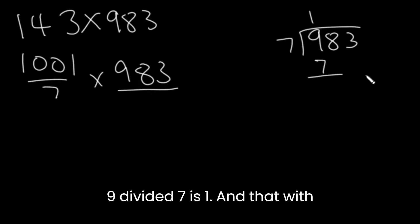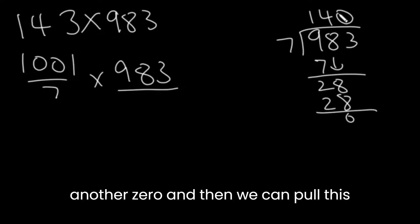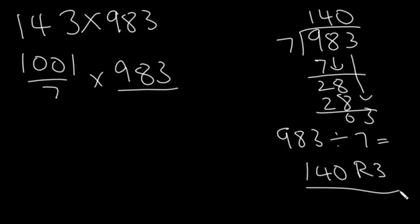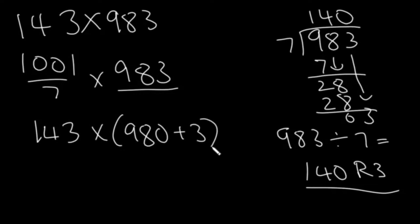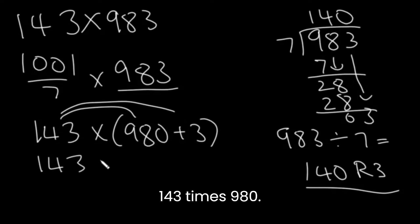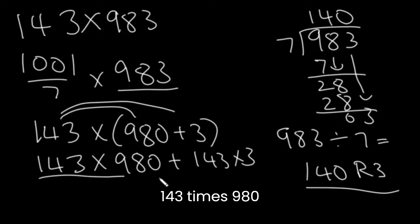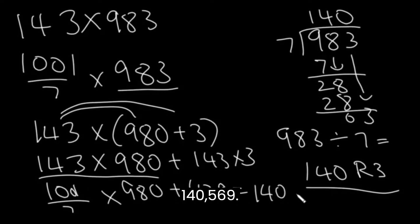9 divided by 7 is 1 with a remainder of 2. Then we push down the 8, so we write 4 there with a 0, and pull down the next digit. So 983 divided by 7 is 140 with a remainder of 3. We make this 143 times 980 plus 3, then use the distributive property to get 143 times 980 plus 143 times 3. 143 times 980 is 1001 over 7 times 980, plus 429. Doing the calculations will give us 140,569.